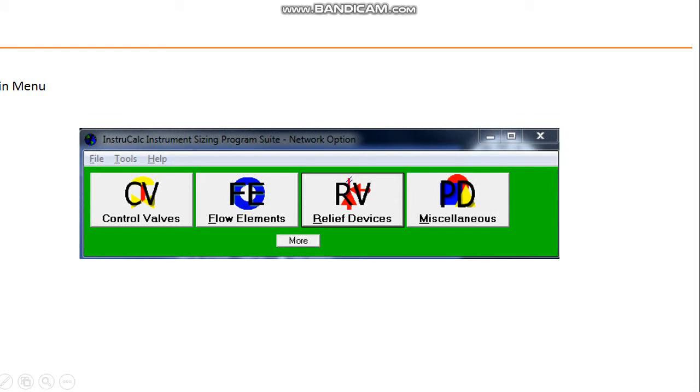This is the main menu of InstruCalc. Here you can see control valve, flow element, slave devices, and miscellaneous instruments. We are going to choose flow elements.